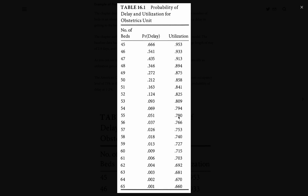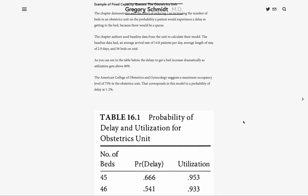As you can see in this model, utilization between 66% and 75% generally incurs very low delays, but then you start to experience a very quick, exponential kick of the curve as you get into utilizations in the high 70s and 80s. This explains why the College of Obstetrics and Gynecology suggests a maximum occupancy of 75%.